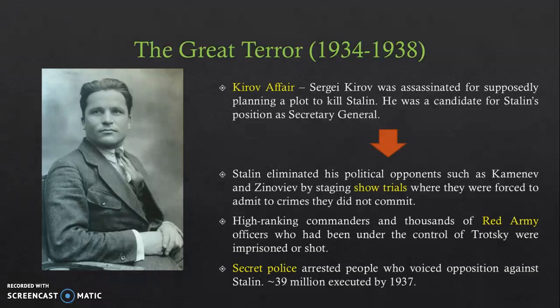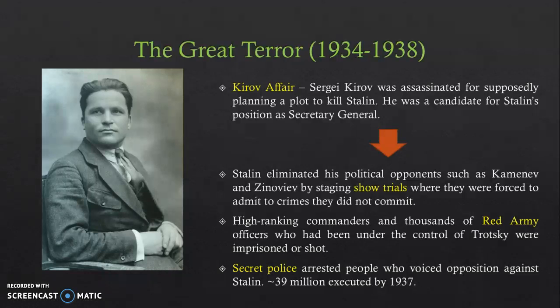After many days of torture and imprisonment, they would get opponents to sign confessions saying they committed crimes they did not commit. This was showcased to the public to make it look as if Kamenev and Zinoviev were guilty. High-ranking commanders and thousands of Red Army officers who had been under the control of Trotsky were also imprisoned or shot. Remember, Stalin clearly did not like Trotsky, and many commanders in the Red Army were loyal to Trotsky, so he needed to get rid of them as well — this was him consolidating his power. The secret police arrested people who voiced opposition against Stalin, and by 1937, 39 million people had been executed. Under Stalin's rule, there was great control over the people.